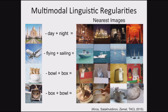Once you get into representations dealing with text and images, you can do interesting operations. Take a particular image, get its representation, subtract the representation of 'day,' add 'night,' and find the closest images. You can take kittens and say minus ball plus box to get kittens in a box, or minus box plus ball to get kittens with a ball. These are fun to look at, but they don't mean much because we're not specifically optimizing for those things.